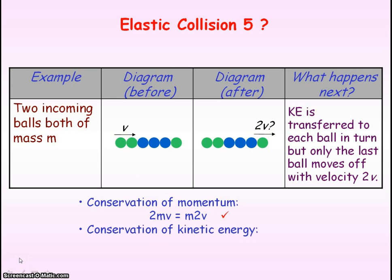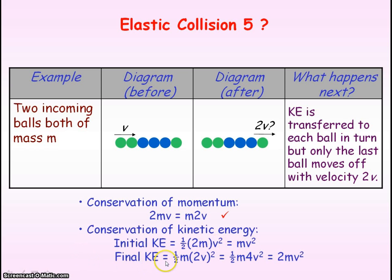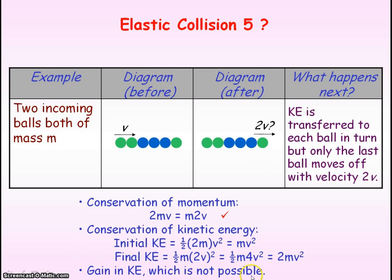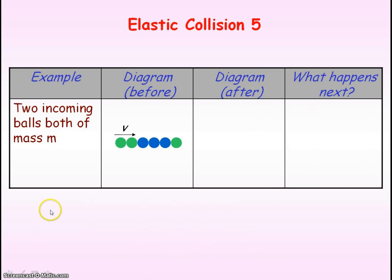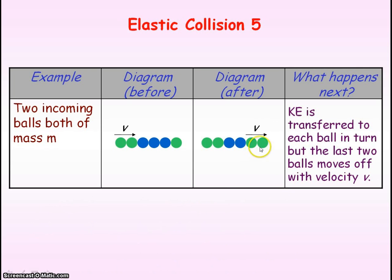Now let's check conservation of kinetic energy. Initial KE equals ½ × 2M × v² = Mv². Final KE would equal ½ × M × (2v)² = ½ × M × 4v² = 2Mv². We've gained kinetic energy, which is not possible. So this scenario is not physically possible. What is possible is for the last two balls to move off with velocity v, so that both momentum and kinetic energy are conserved.